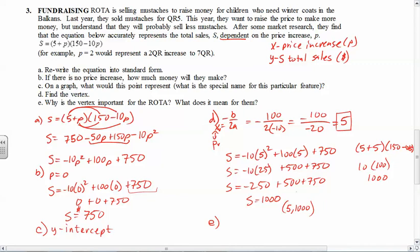The maximum amount of money that they can make. And so this says if X is 5, now remember X was the price increase, so if we raise the cost by 5 Qatari Reals, we will make or will earn a maximum 1000 Qatari Reals. So there you go, that's what the vertex means, that's the maximum amount of money that they can make is a thousand Qatari Reals.